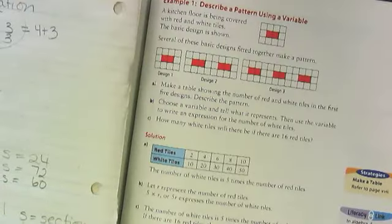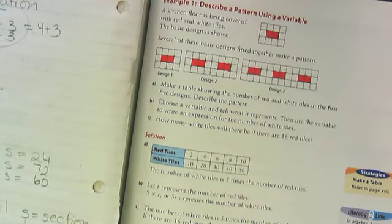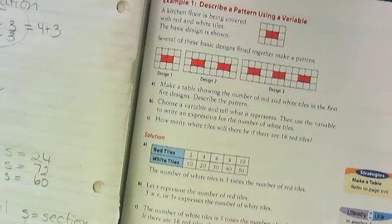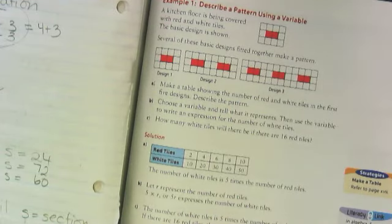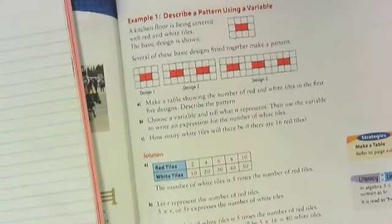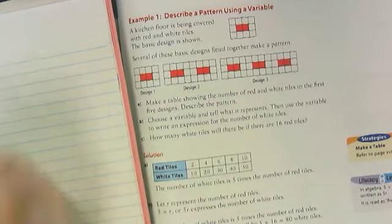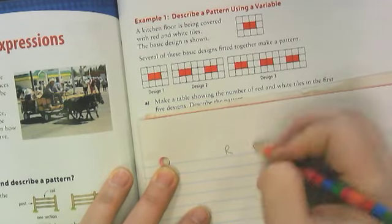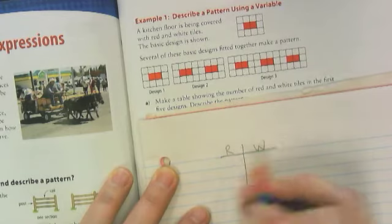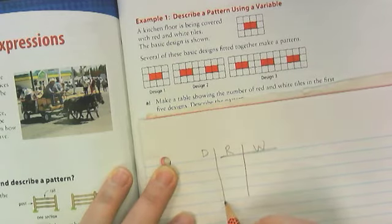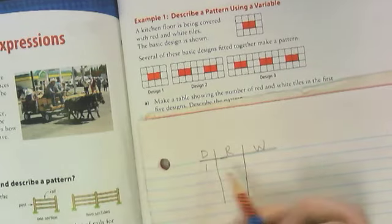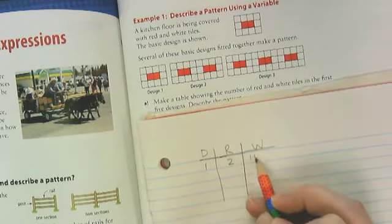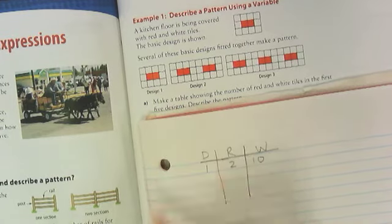Let's look at this other pattern. Kitchen floor is being covered with red and white tiles. This is the basic design. Look at the first three designs and we're going to make a table for red tiles to white tiles. Here's our design one. How many red tiles do we have? Two. How many white tiles? Four. Four. And two.